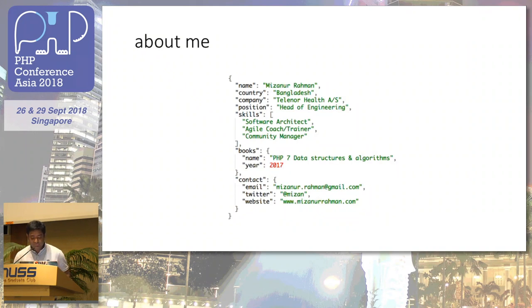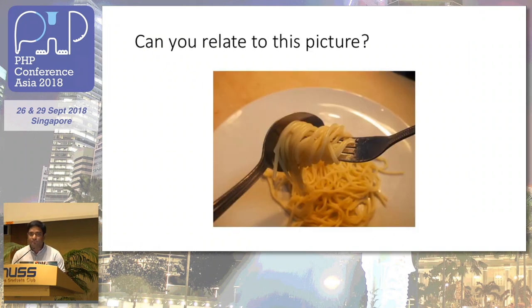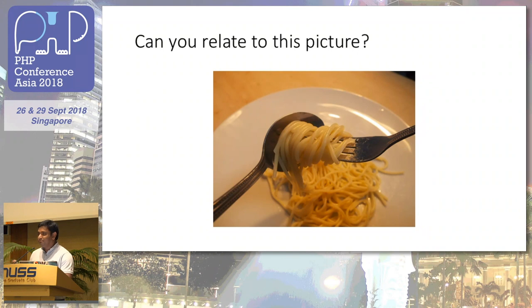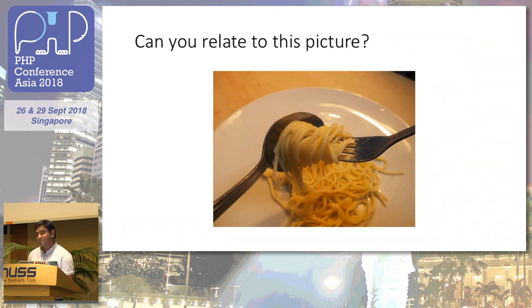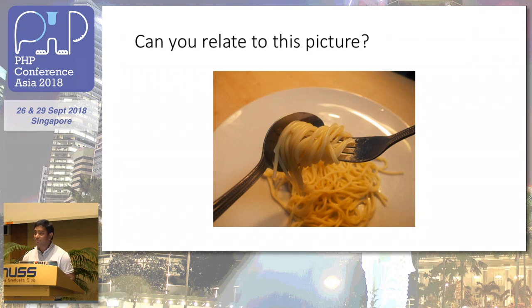Since we just had lunch, I decided to show a picture of food so we can relate. Spaghetti. When you try to eat spaghetti with a spoon, you have a hard time placing it. You need a fork to scroll around and have the spaghetti. But once you're almost done, you don't want to leave the sauce in the plate, so you need a spoon to eat that. So there's a common problem: should I use a fork or a spoon? And we end up using both.